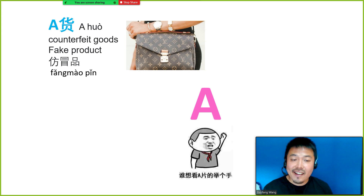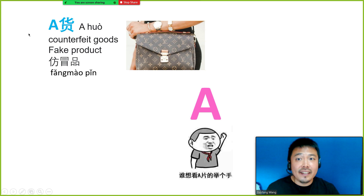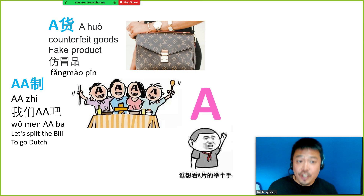The first one will be A货 (A huo). In Chinese we can also call it 仿冒品, which means counterfeit goods, fake products. For example, the fake LV, the fake Prada — we call them A货.